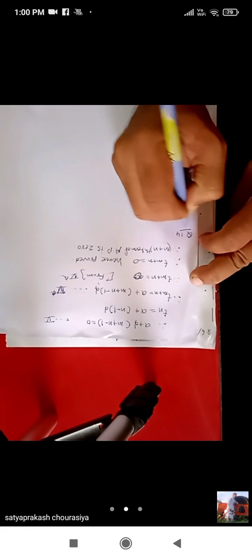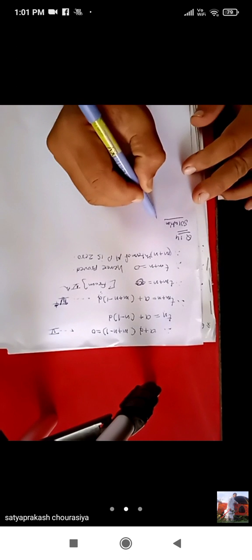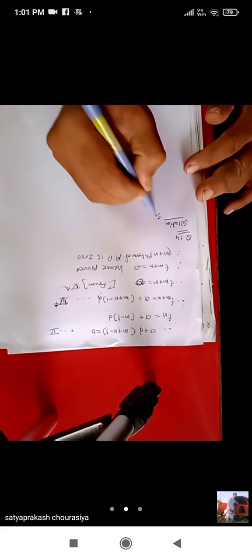Question number 14 — activity, its solution. First of all, write down the formula of simple interest. Simple interest is equals to principal into rate of interest into time period upon 100. This is the formula.